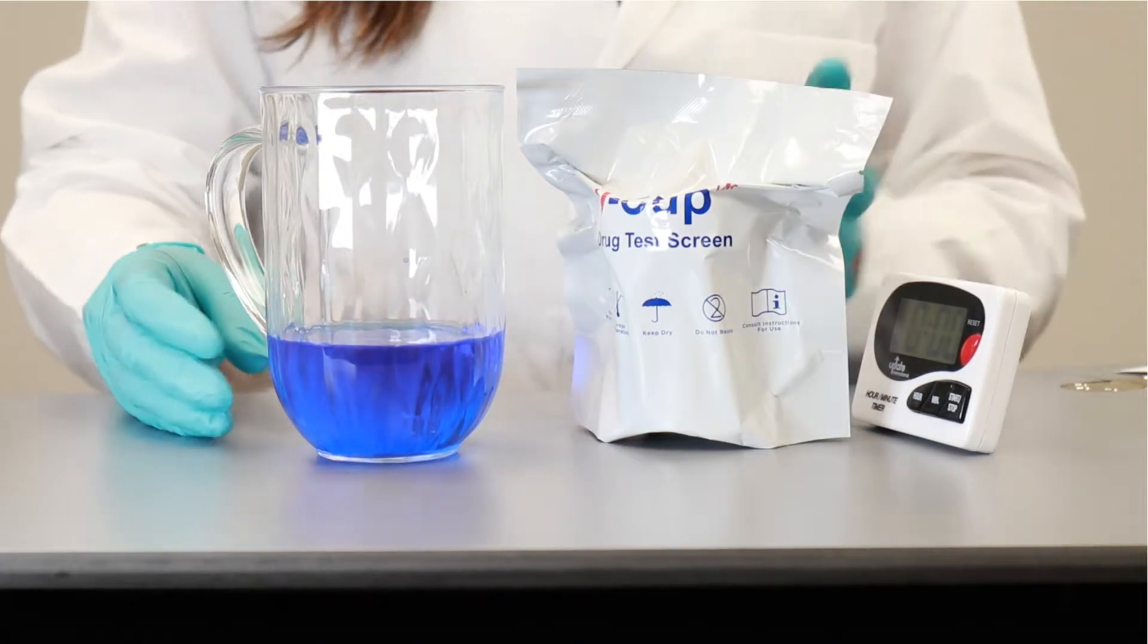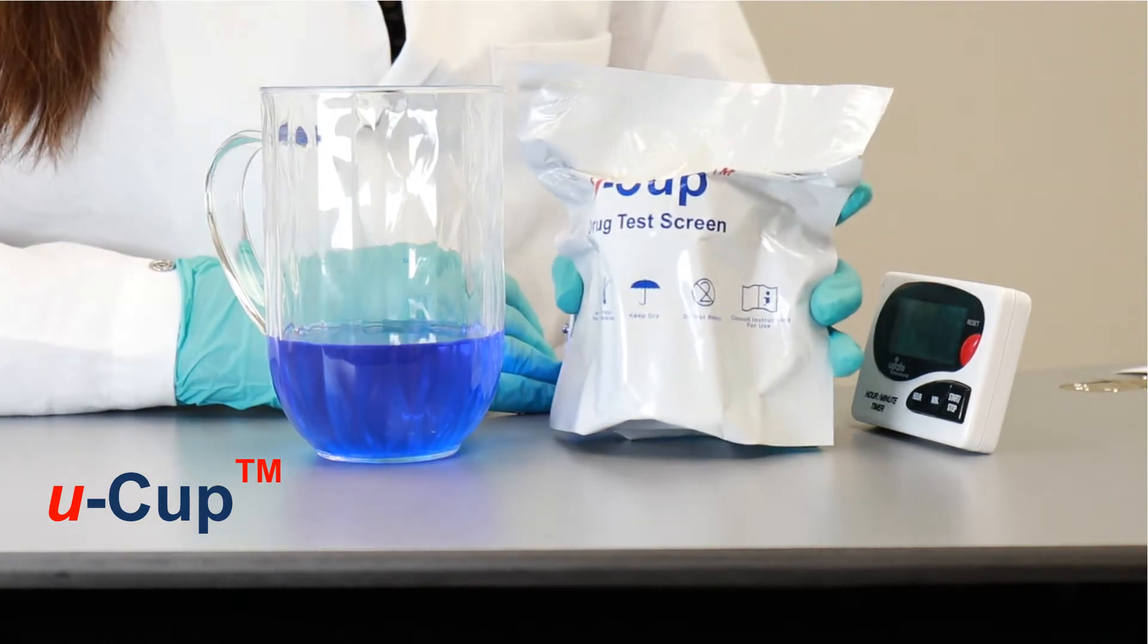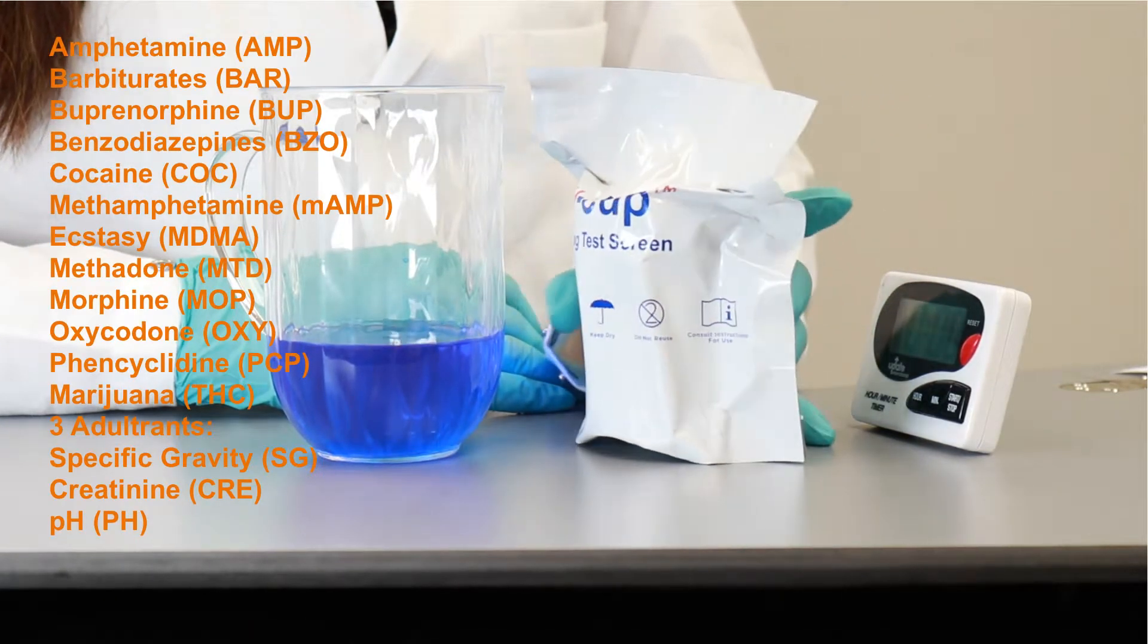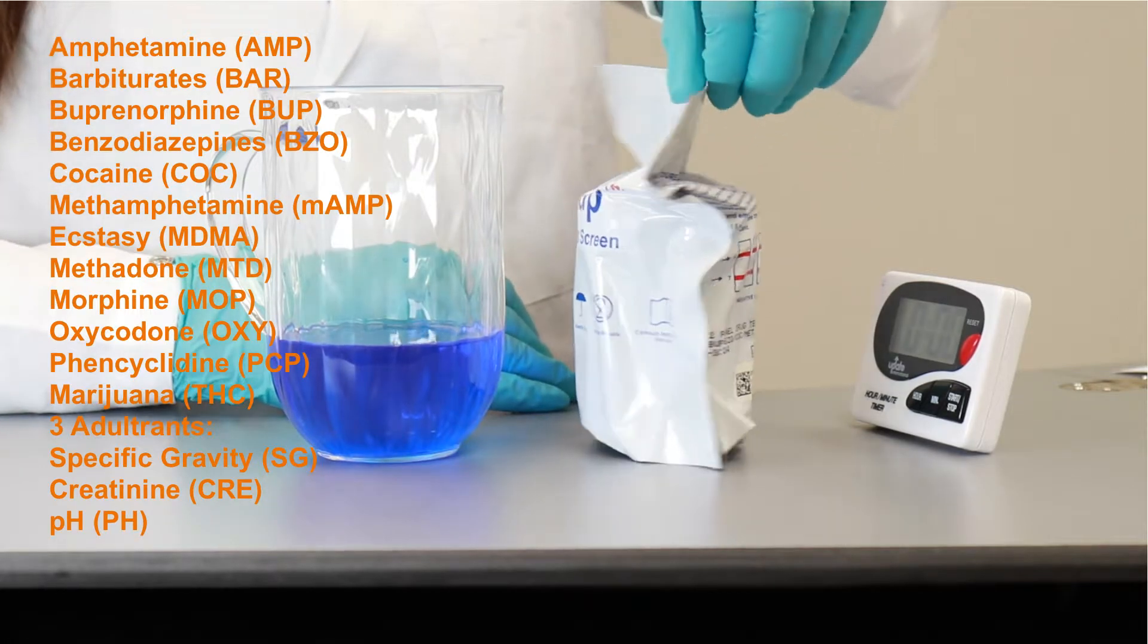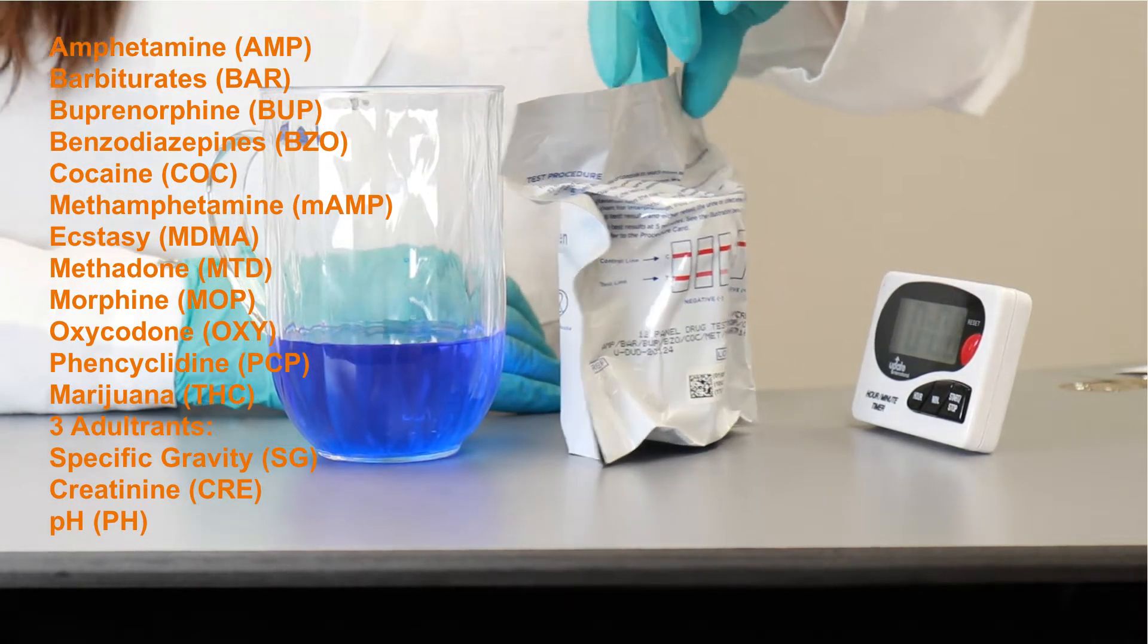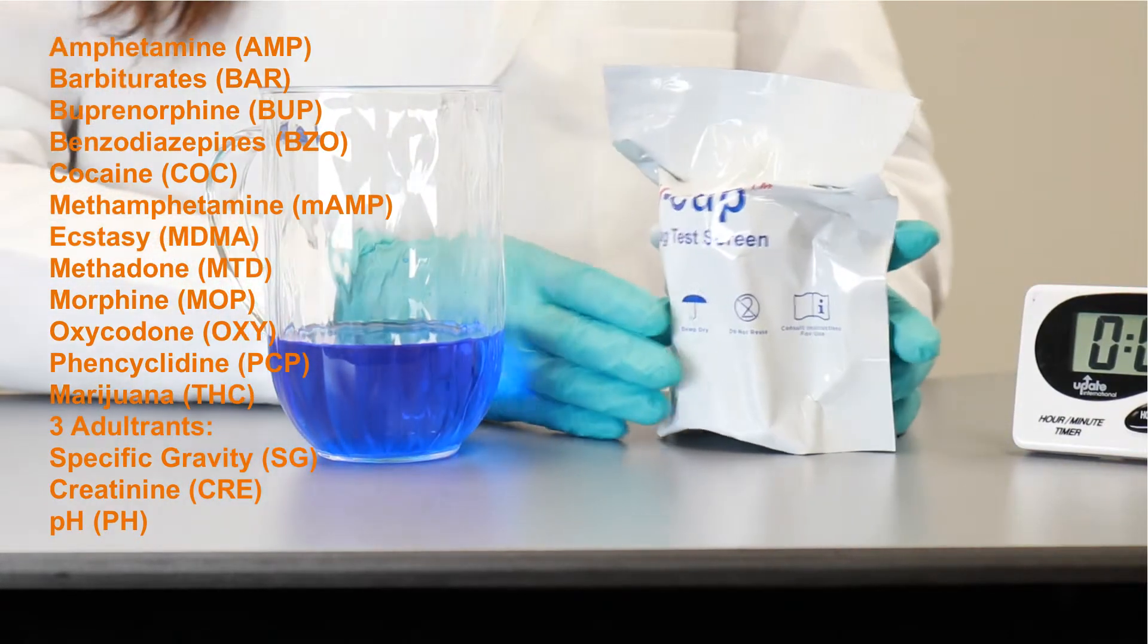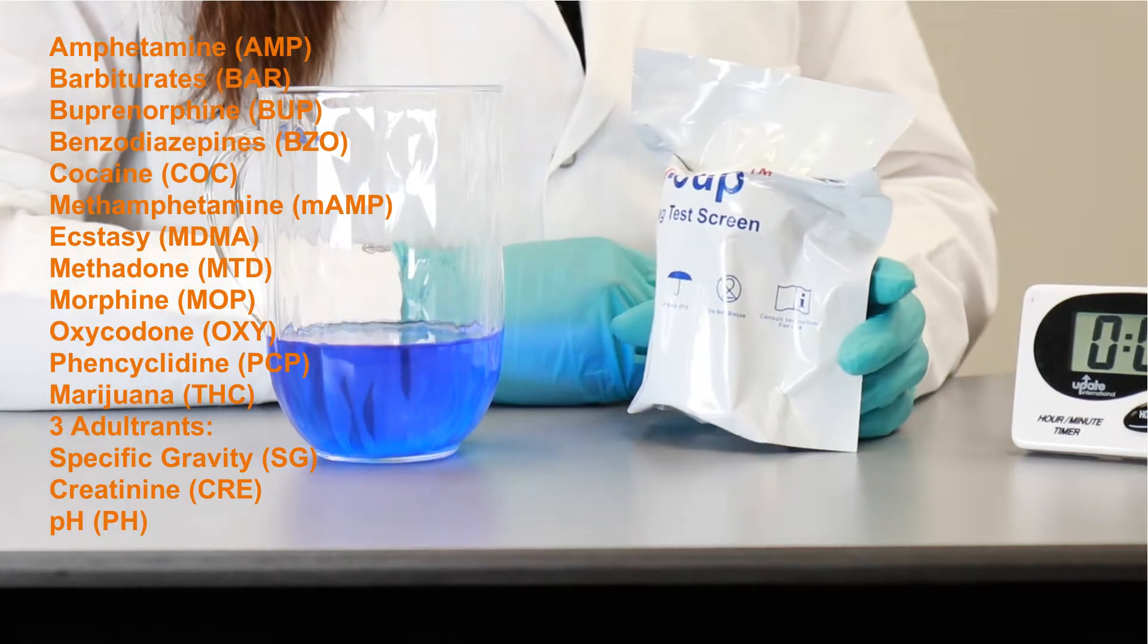We have these U-cups that we are going to be showing today. This particular one is a 12-panel cup with three adulterants in it. These cups are FDA approved and CLIA-waived, and they come in up to 16 CLIA-waived drug configurations.